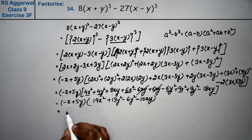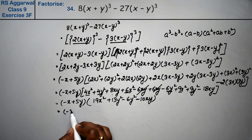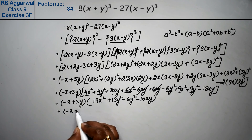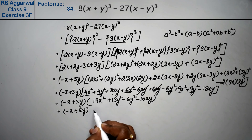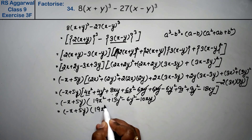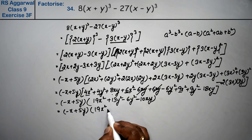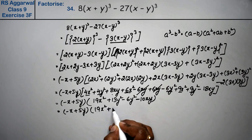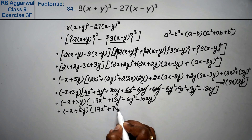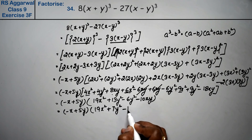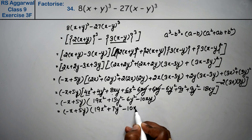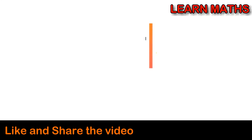So what can we write? Minus (x + 5y) into [19x² + 7y² - 10xy]. That is the answer. Thank you.